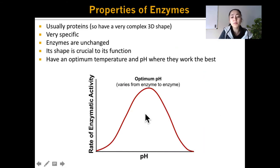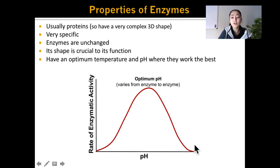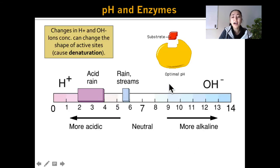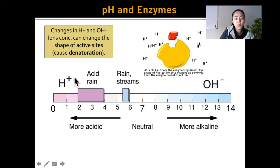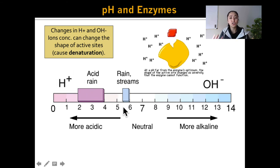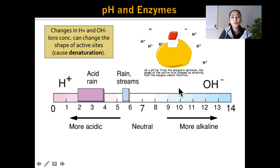With temperature, denaturation only happens at really high temperatures. When we're talking about pH, denaturation actually happens at pHs that are too low or too high. As we change pH and get more acidic, we're increasing the amount of hydrogen ions in the solution. If you increase the amount of hydrogen ions, what it can do is actually mess up the chemical bonds inside the enzyme and cause it to change shape.